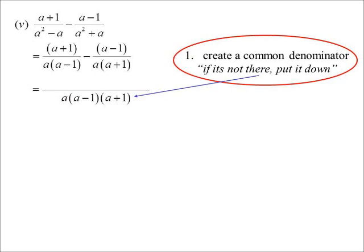And then to work out your common denominator, you just go from left to right and ask yourself the question. If it's not there, I'll put it down. So a, it was not there, so I put it down. A minus 1, it was not there, so I put it down. A, oh, it's there. Fine. A plus 1, oh, it's not there, so I'll put it down. There's my denominator. So I know all the factors are there.